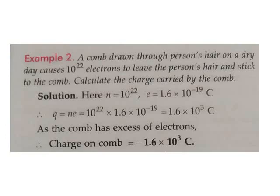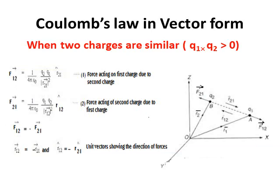But according to the statement, we have to find out the charge on the comb. Therefore, it will be -1.6 × 10^3 coulomb because now the comb has excess of electrons.